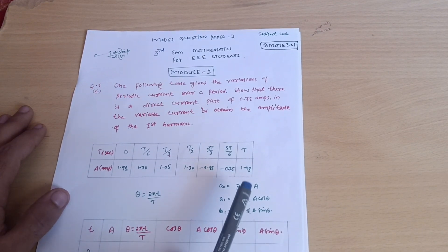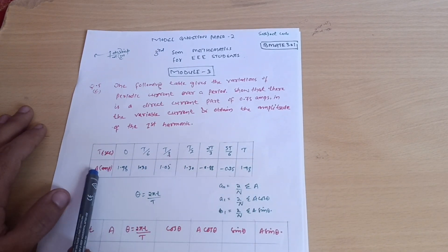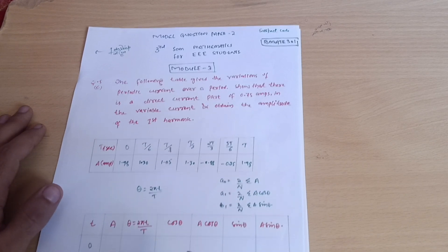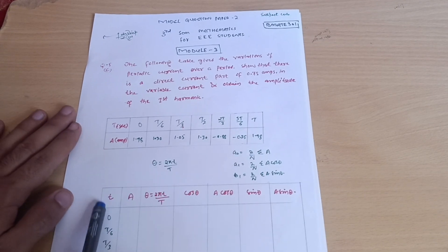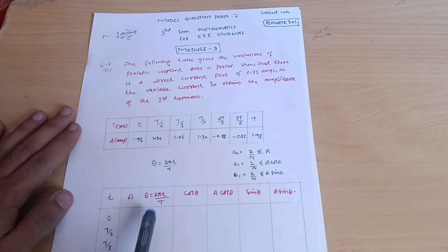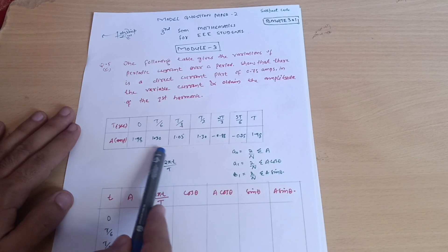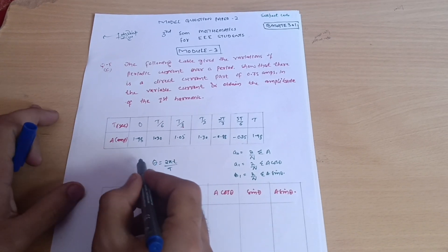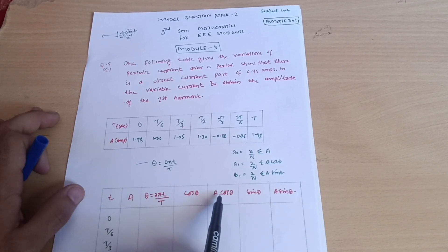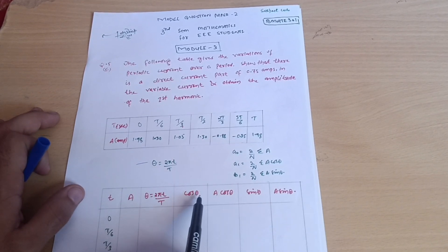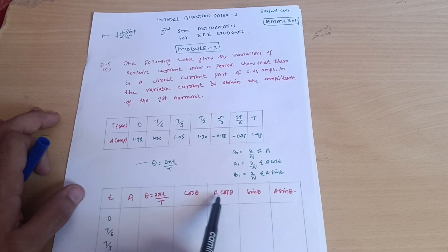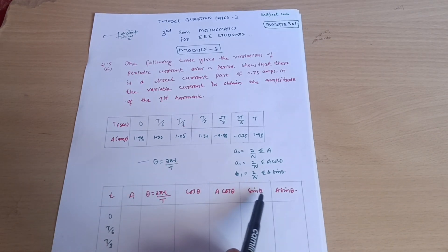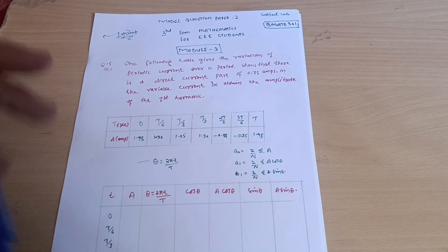In these formulas, the unknown values to compute are a·cos θ and a·sin θ — we need their summations. That is why you have to format a table with the given t values, a values, and calculate θ. For θ, there is a formula: θ = 2πt / T. Then you compute cos θ and a·cos θ separately, and similarly sin θ and a·sin θ.